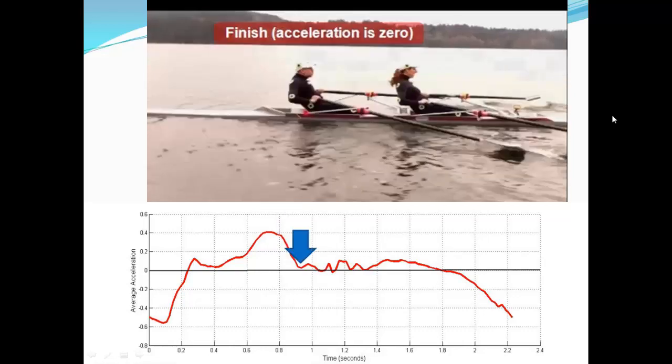At the finish of the stroke, the boat's acceleration once again drops to zero because there are no forces acting on the boat once the blades are out of the water except the drag forces. If we were to stop all movement at this point, the boat would just coast to a stop. However, as we move our bodies up the slide towards the stern, the boat reacts by moving towards the bow due to conservation of momentum — this is also the cause of the surge of the boat toward the bow after the blades have been extracted. Extracting the blades cleanly on the square will prevent the boat from slowing down. Our acceleration curve doesn't drop below zero, so we can assume our finishes are pretty clean.